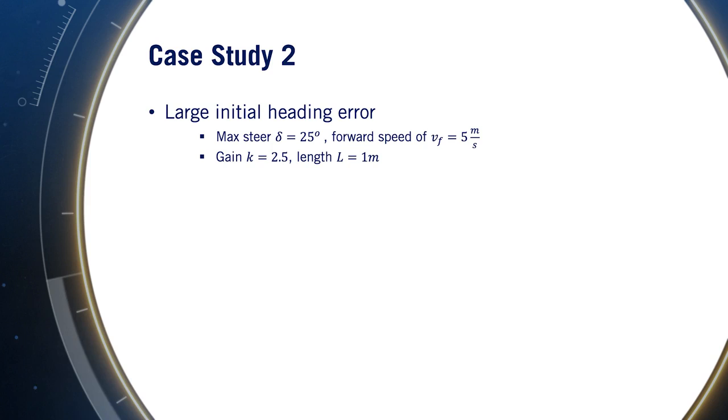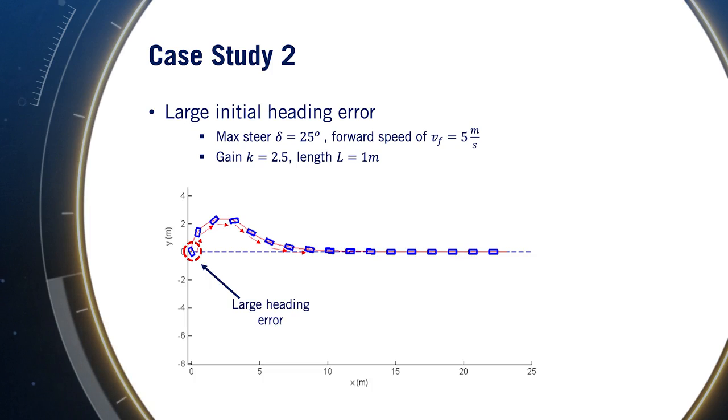In the second case, the simulation can be regenerated for the scenario at large initial heading error. The parameters are the same as the previous case, but the vehicle starts out on the path pointing very much in the wrong direction. The simulation results show the heading error is corrected by the Stanley control law. First, the steering command is up against its limit as the heading error is corrected. Then, as the cross-track error starts to grow, the steering commands continue to correct the heading of the car beyond alignment with the path. Finally, the car enters the exponential convergence segment as before.